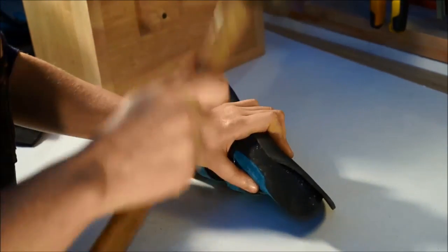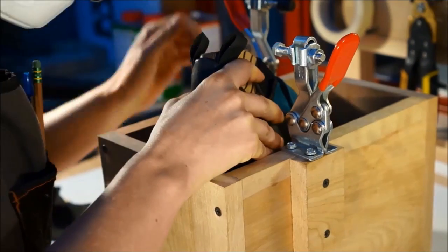The sole, made of either Vibram or Stealth rubber, is applied and the shoe is put into a sole press to ensure a solid bond.